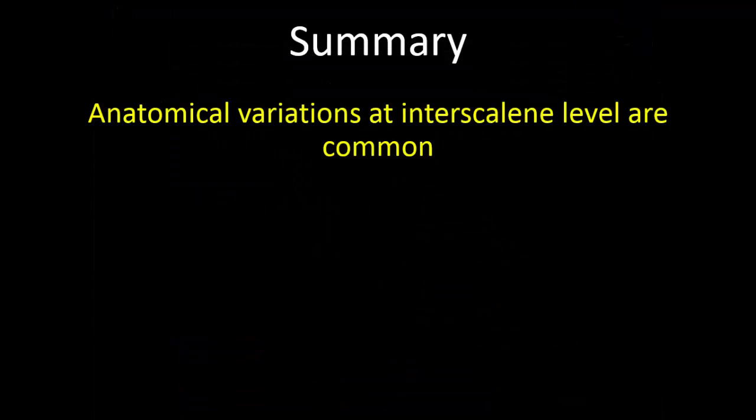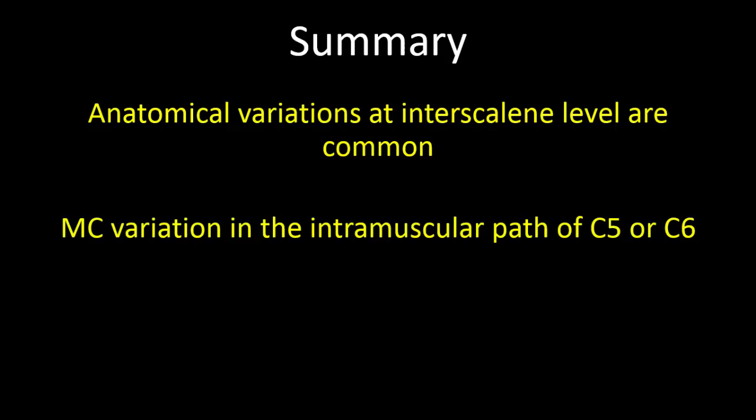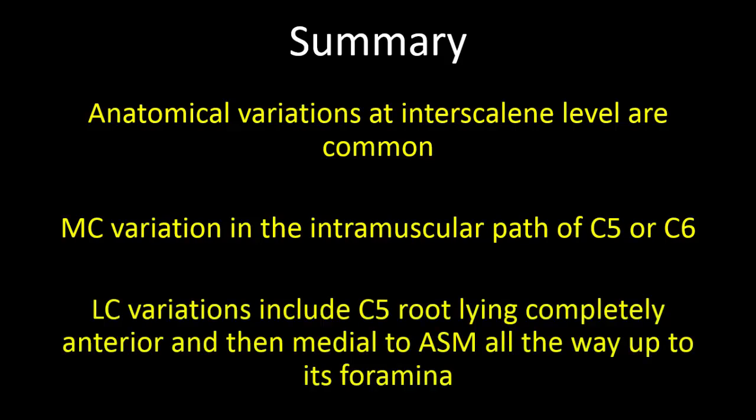So to summarize, the anatomical variations at the interscalene level are common. The most common variation is the intramuscular path of C5 or C6, while the less common variation includes the C5 nerve root lying completely anterior and then medial to the anterior scalene muscle all the way up to its foramina. Thank you.